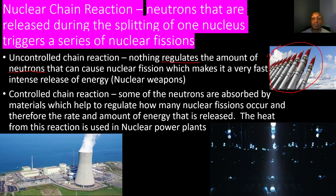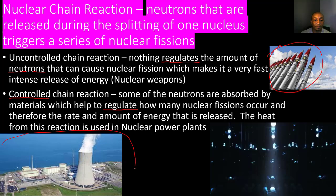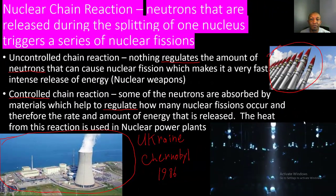Our next type is a controlled chain reaction. When we say controlled, that means it can be regulated — some of the neutrons are absorbed by materials, which helps regulate how many nuclear fissions occur and therefore the rate and amount of energy released. This is why we use controlled chain reactions in nuclear power plants: we can regulate how much energy is released by controlling the number of neutrons that hit uranium-235 atoms. The heat from this reaction is then used in those nuclear power plants.